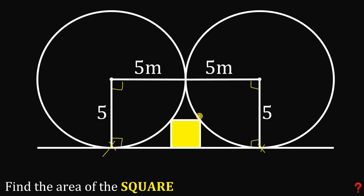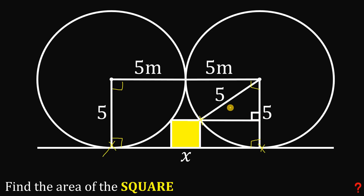Another intersection point is the intersection between the circle and the tip of the square. From there, let's draw a radius connecting to that point — its measure is also 5 meters, since it is the radius of the circle. Now let x be the side length of the square, and from the tip of the square let's draw a perpendicular line to the radius to create a right triangle, which we will use to solve for x.